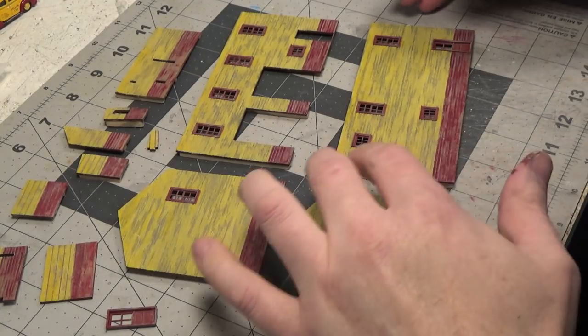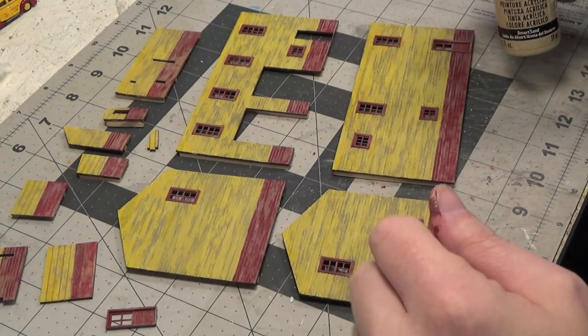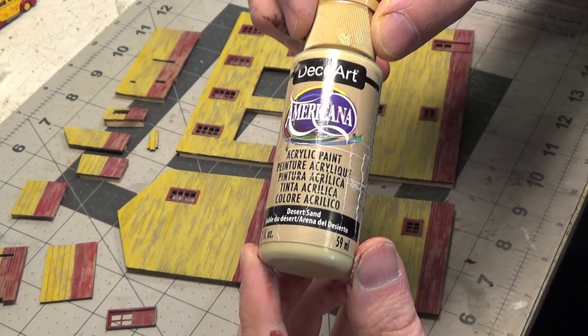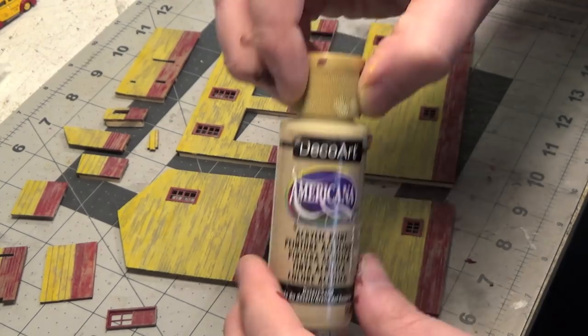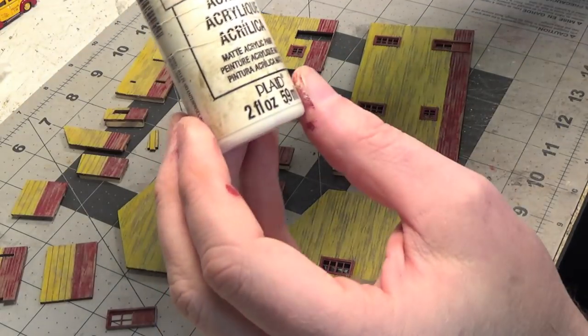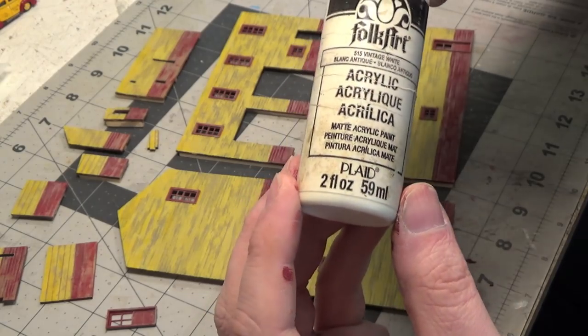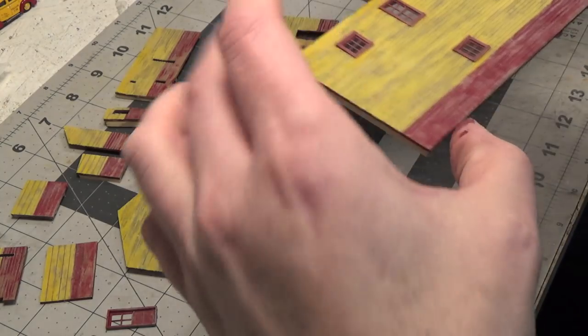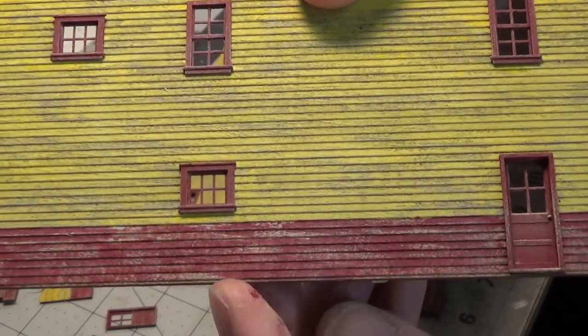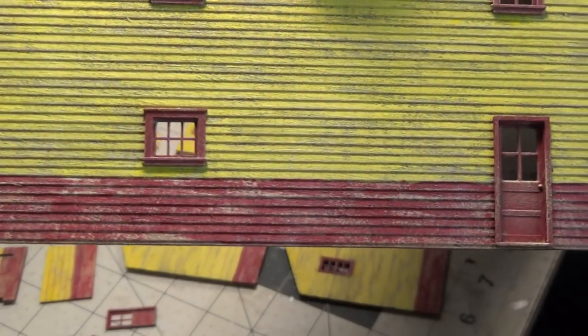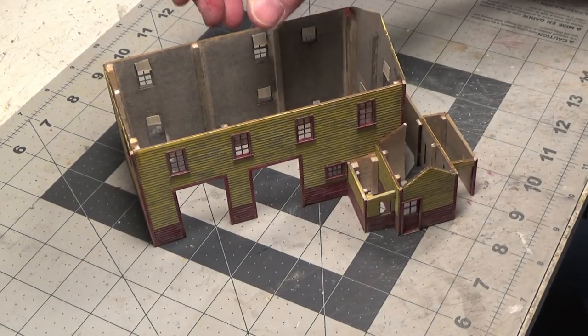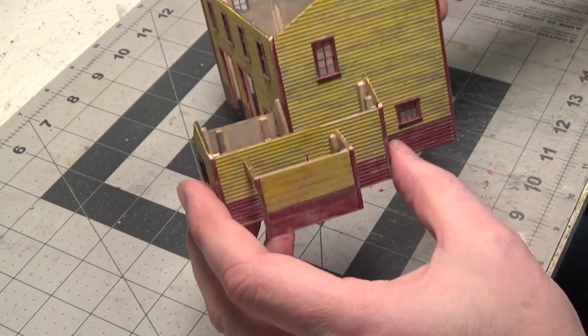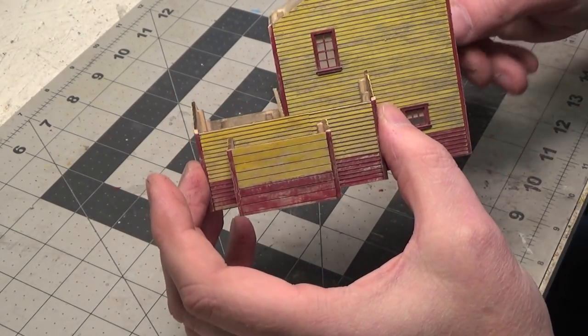So I've put the windows and doors in and after they were in place, I dry brushed over the walls again with desert sand and a little bit of vintage white. So this is where we're at so far. As you can see, I extended the side.